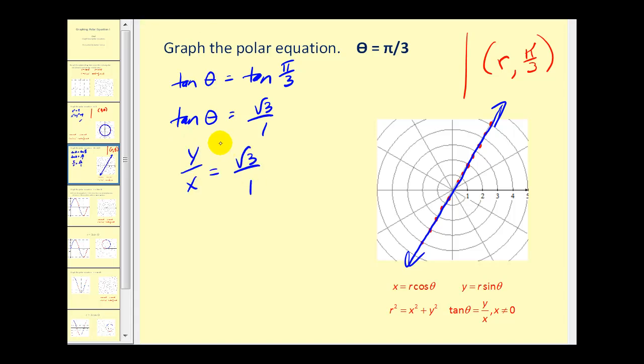Now we could cross multiply. y times one must equal square root three times x. So this verifies we have a line that passes through the pole or the origin and has slope square root three over one.